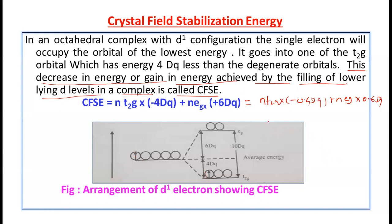For D1 configuration, the one electron enters the T2G orbital. So CFSE = (1 × −4dq) + (0 × +6dq) = −4dq. This means the energy of the complex is lowered by 4dq units and the complex acquires higher stability. Whenever electrons enter the lower T2G orbital, the complex gets stabilized more.